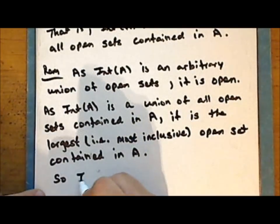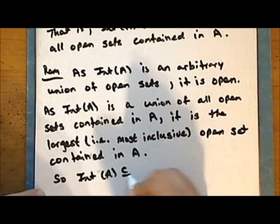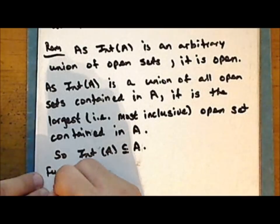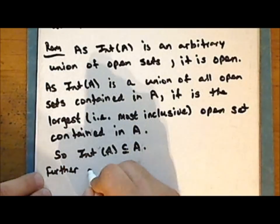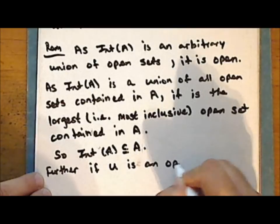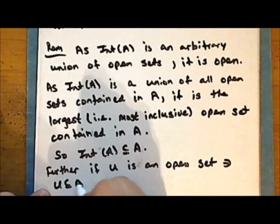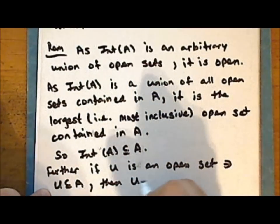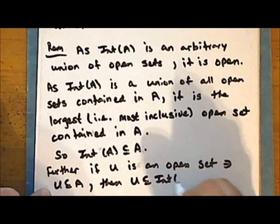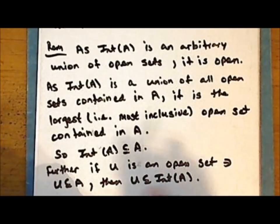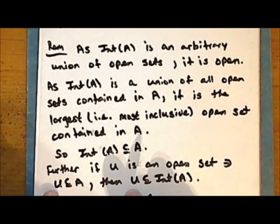The interior of the set A is always a subset of the set A. Further, if the set U is an open set such that the set U is contained in the set A, then that set is a subset of the interior of the set A, since the interior of the set A is the union of all open sets contained in the set A.